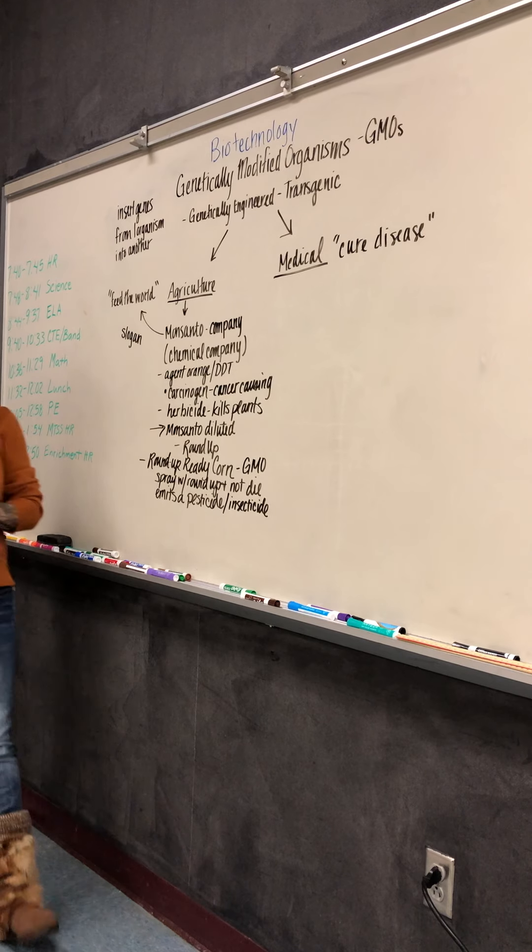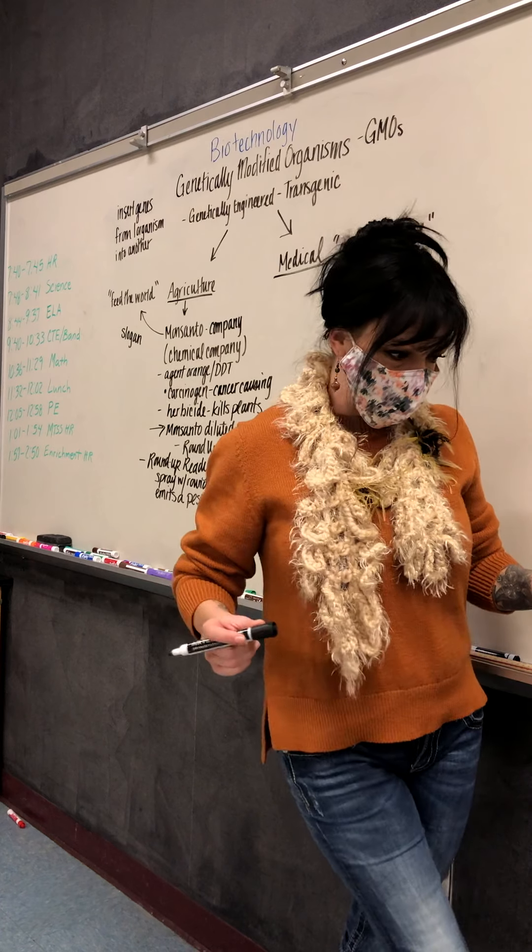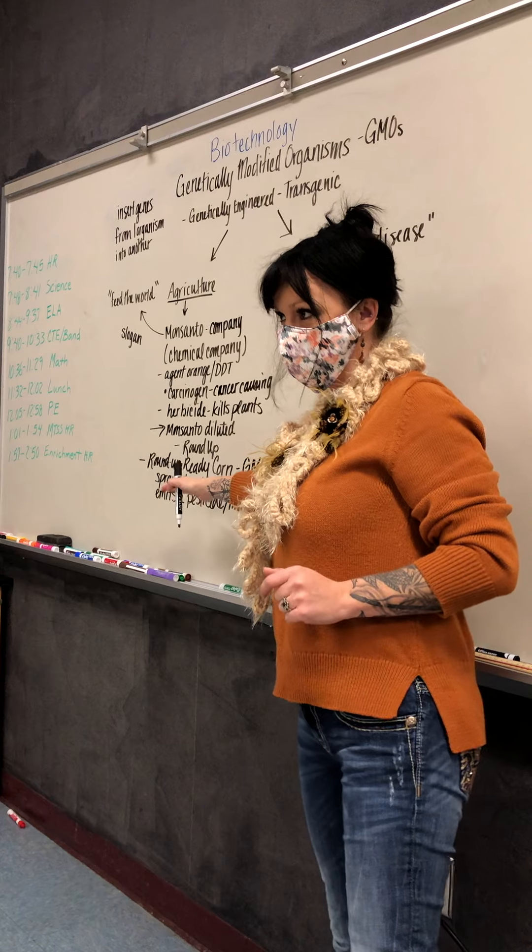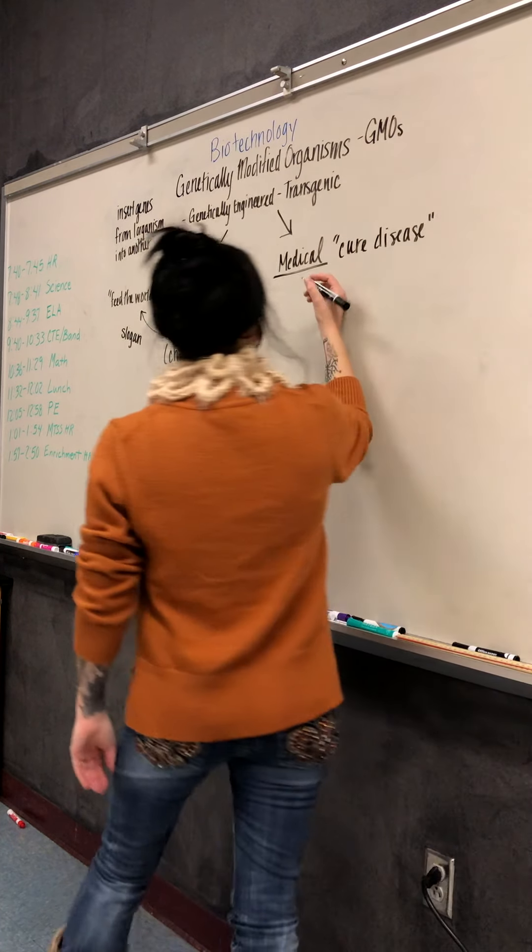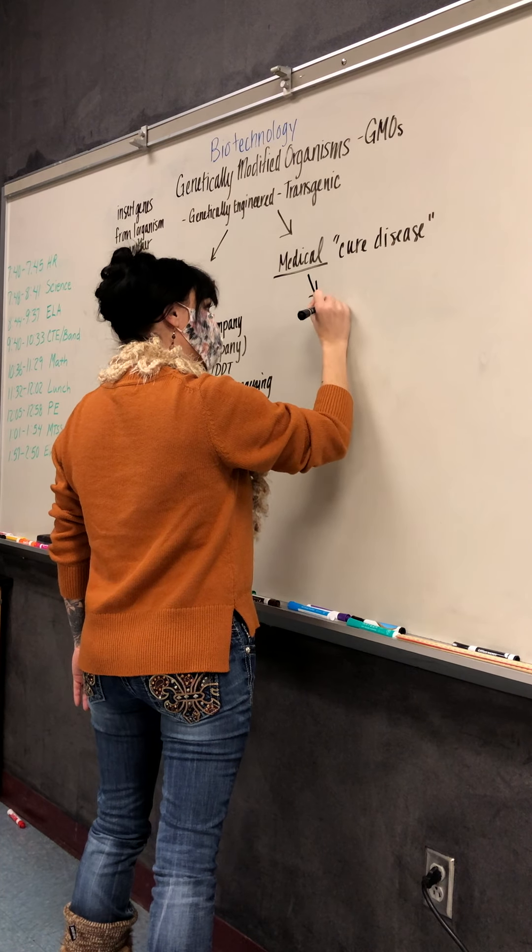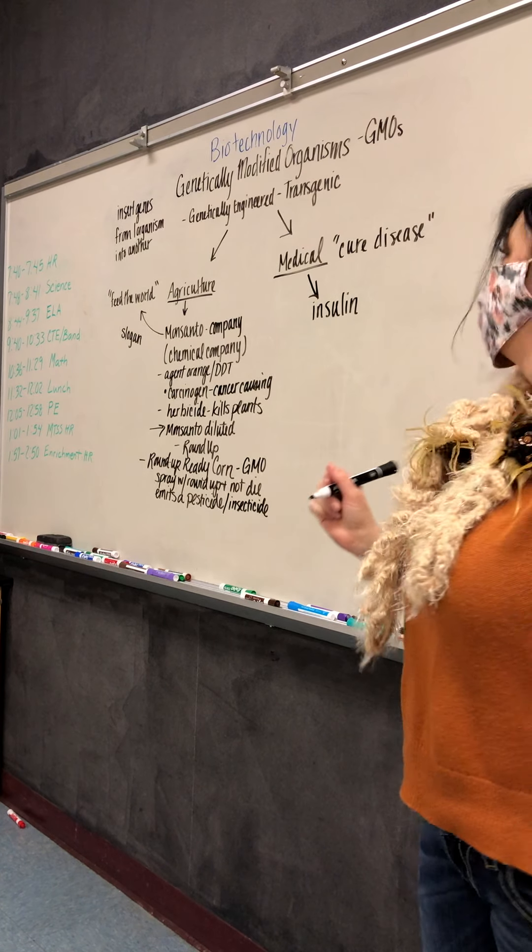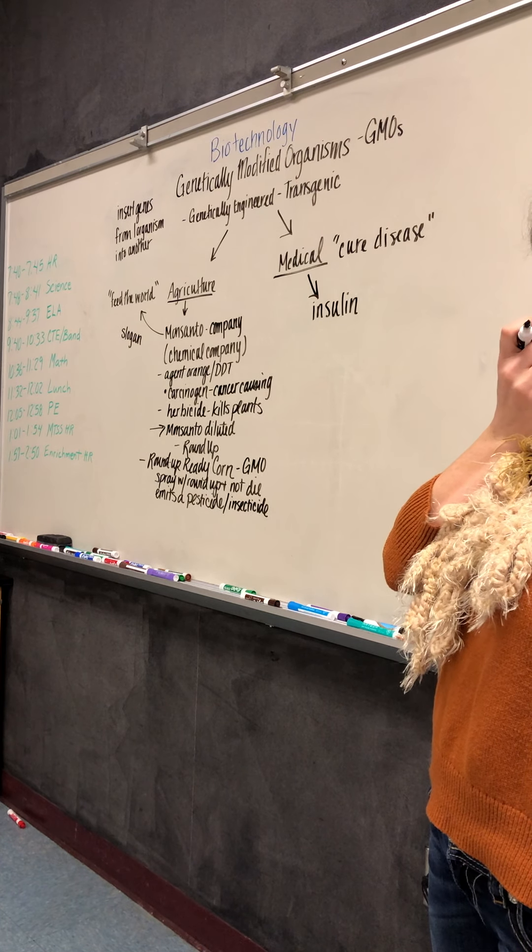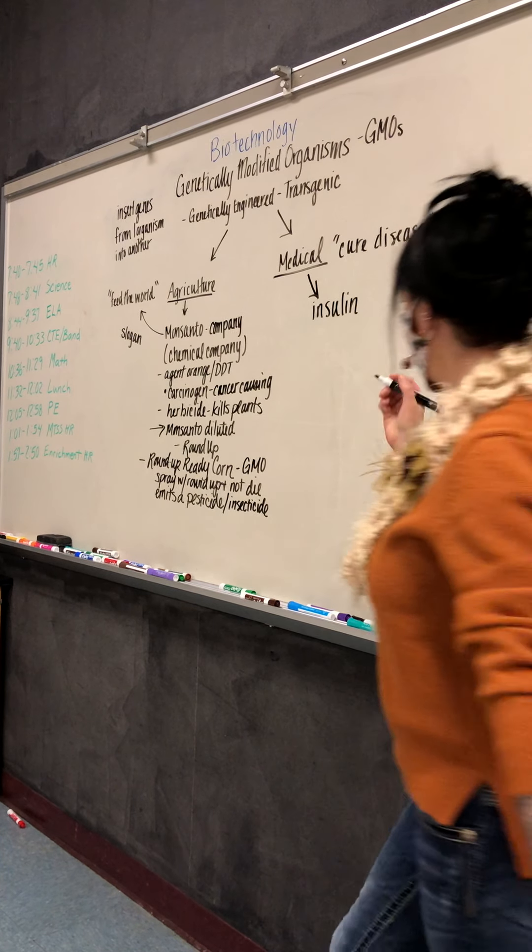Medical side, their kind of slogan is cure disease. Now, the medical side of it is not as bad as the agricultural side because we're not dealing with all these bad chemicals. Medical side is actually trying to cure disease. The most common genetic modification with medical stuff is insulin. What do you use insulin for? I'm not sure what it's for, but I know people that are sick. Diabetes. Yeah, it's for diabetes.